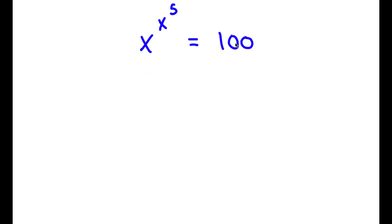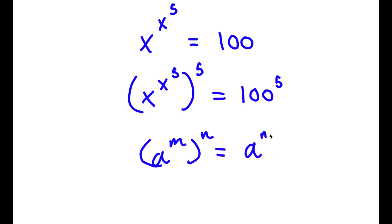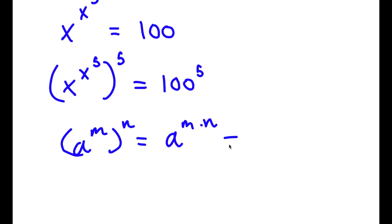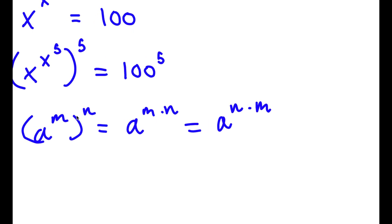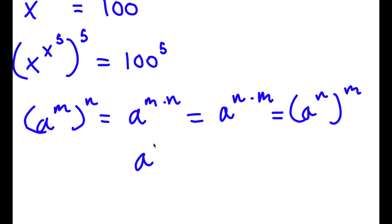Alright, so I have x to the power of x to the power of 5 is equal to 100. The first thing I'm going to do is take the power of 5 on both sides, giving x to the power of x to the power of 5, all to the power of 5, equal to 100 to the power of 5. Using the same rule: a to the power of m to the power of n equals a to the power of m times n, and we can also write this as a to the power of n to the power of m.